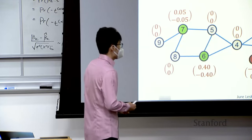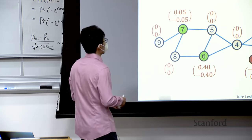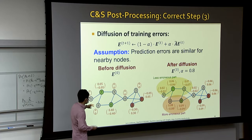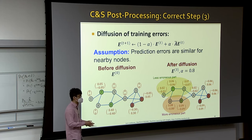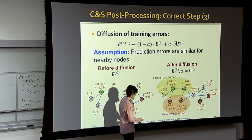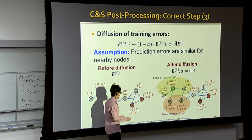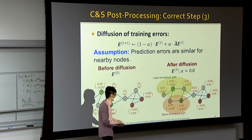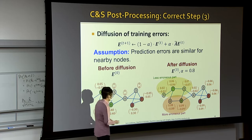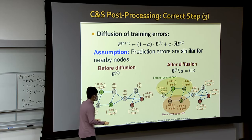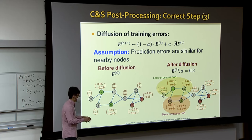Having defined the propagation matrix A-tilde, we diffuse training errors across the network. Starting with computed errors from the base predictor and ground truth, we propagate for three iterations. Some regions of the network show smaller errors, while others show larger errors. The final correction sums the soft predictions with the diffused training errors, weighted by hyperparameter s that scales how much we believe homophily exists in the network. Setting s to zero means no homophily correction; larger s emphasizes more correction.